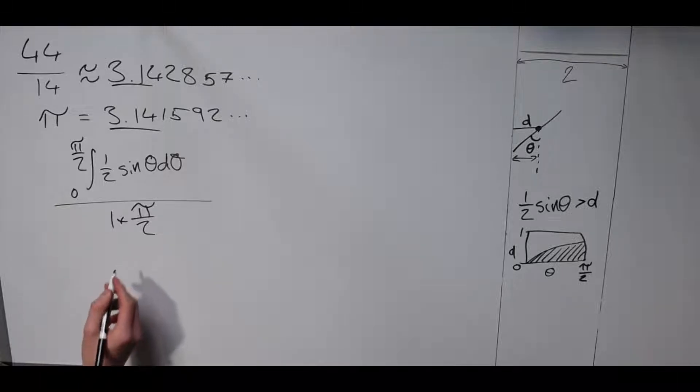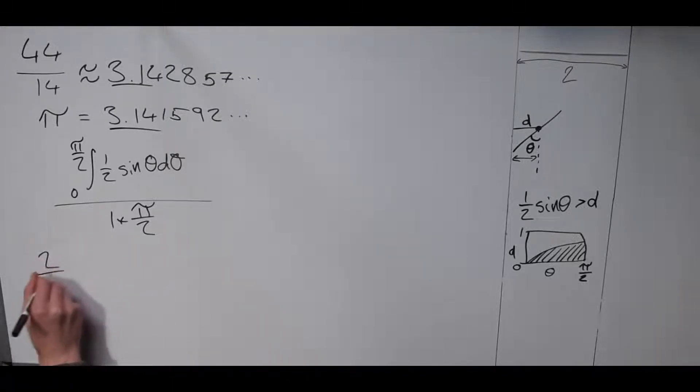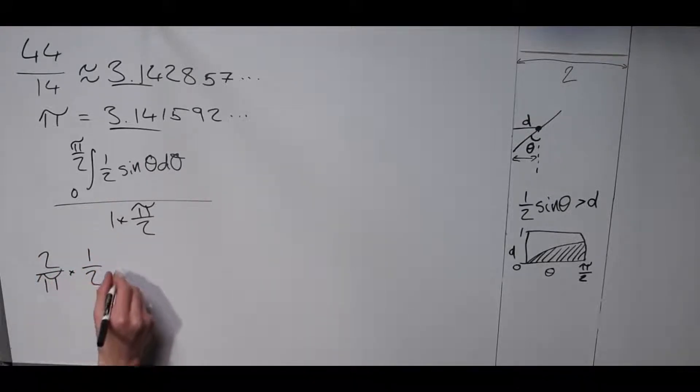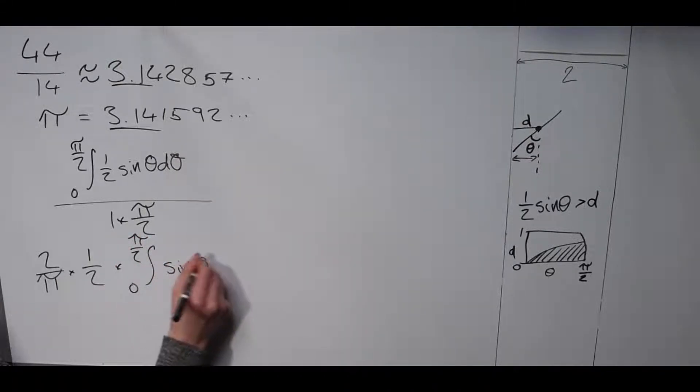Dividing by pi over two is the same as multiplying by two over pi. Factor a half out of that times the integral from zero to pi over two of sine theta d theta.